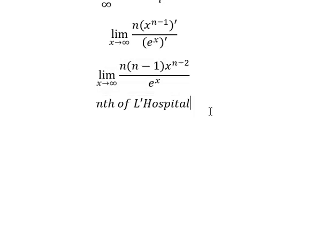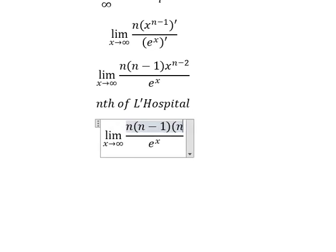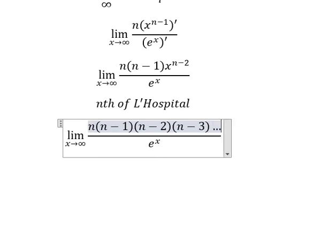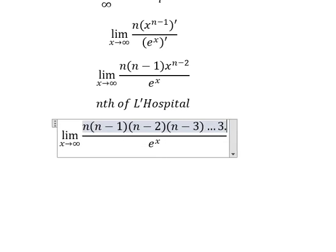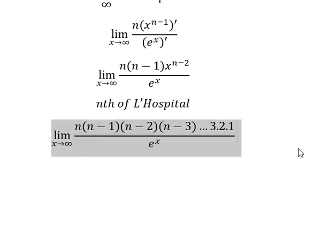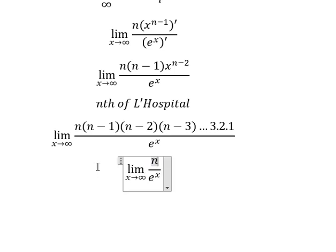So you will have n and n multiply by n minus 1, n minus 2, n minus 3, and so on until we have 3, n minus 1, we have n minus 2 multiply by 2, multiply by 1. So in this situation we can simplify this one by n factorial.